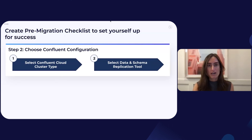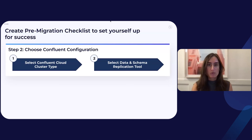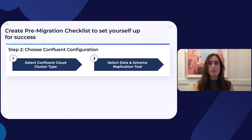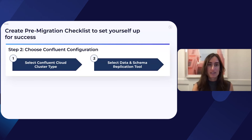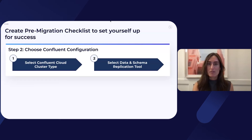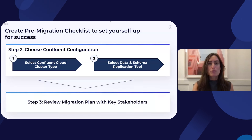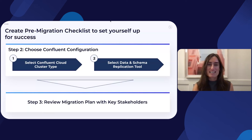If you need to migrate historical data to Confluent Cloud, you'll next want to select the optimal data replication tool. Today, there are three primary tools available to migrate data from Apache Kafka to Confluent Cloud: Confluent Cluster Linking, Confluent Replicator, and MirrorMaker 2. While it is most common for a single replication tool to be used during the migration, it is possible to use multiple replication tools if you desire. If you're migrating data to Confluent and use schemas, you will also want to select the optimal schema replication tool. It is recommended to use Confluent's fully managed schema registry to support the management and evolution of message schemas. Now that you've chosen your Confluent configuration, you can perform the final step of reviewing your migration plan with key stakeholders.